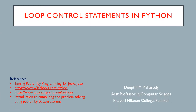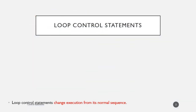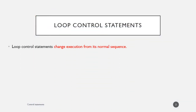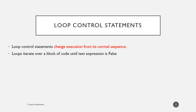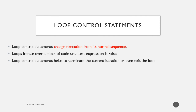Now we can see some loop control statements in Python. What is a loop control statement? Loop control statements change the execution from its normal sequence. Normally, a loop iterates over a block of code until the test expression is false, or in the case of a for loop, until the sequence is exhausted. Loop control statements help to terminate the current iteration or even exit the loop. Python supports three loop control statements: break, continue, and pass.